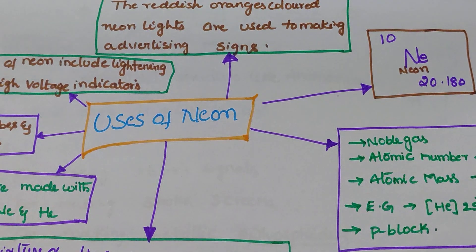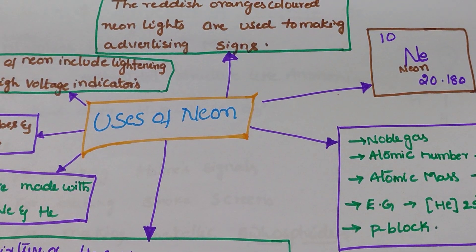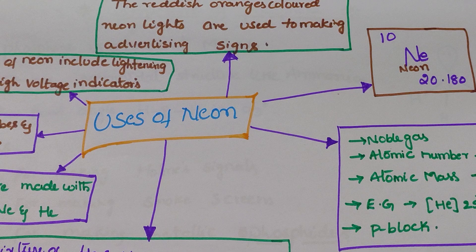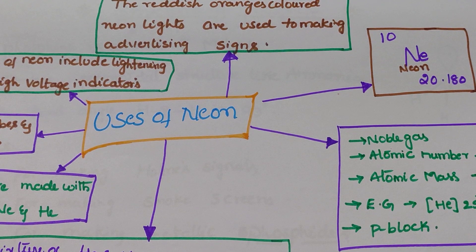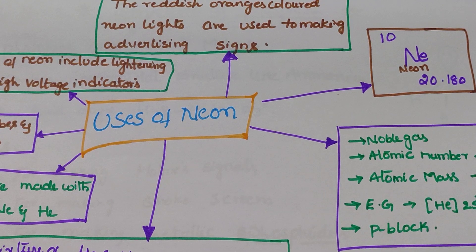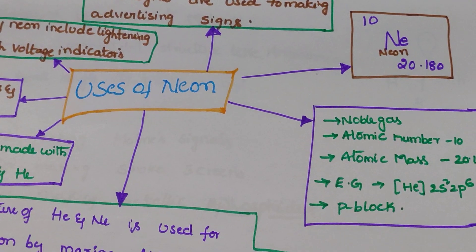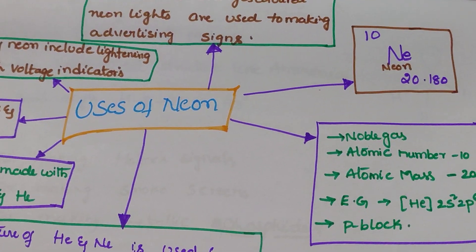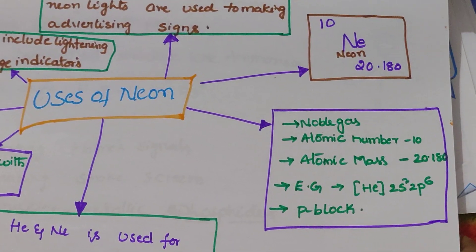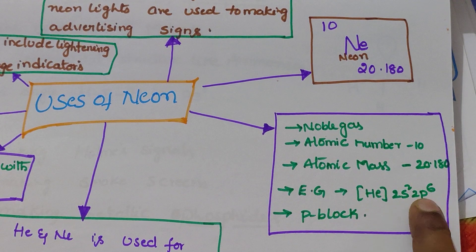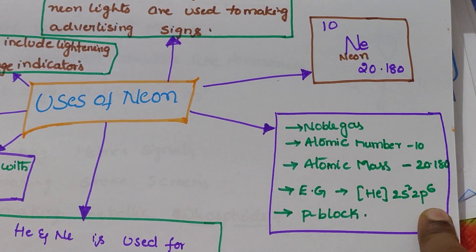It is a noble gas or zero group element. The electronic configuration of neon is helium 2s2 2p6.